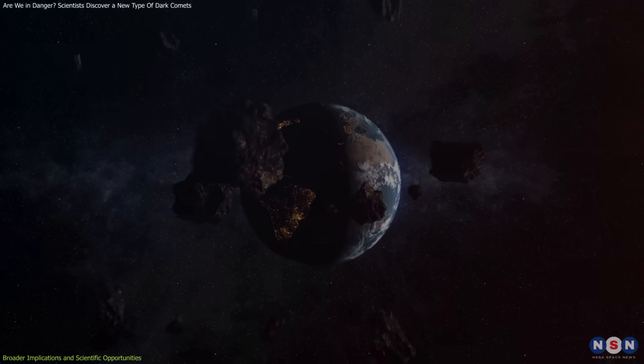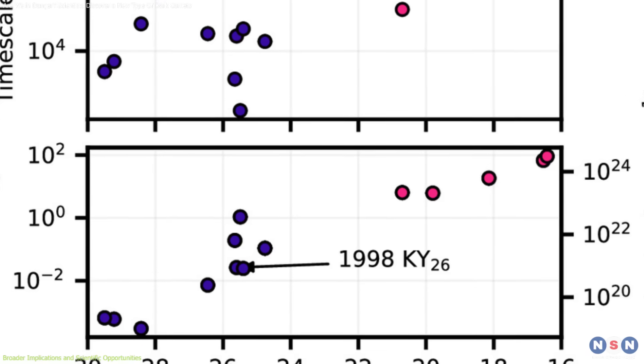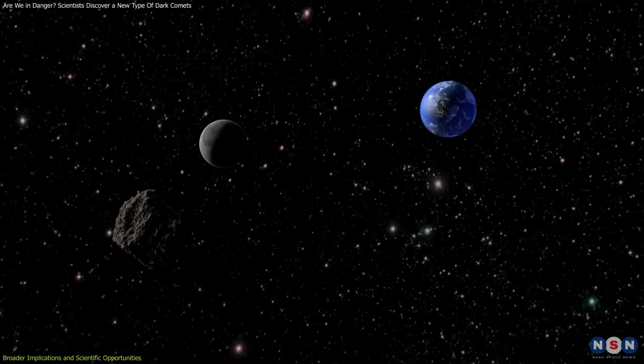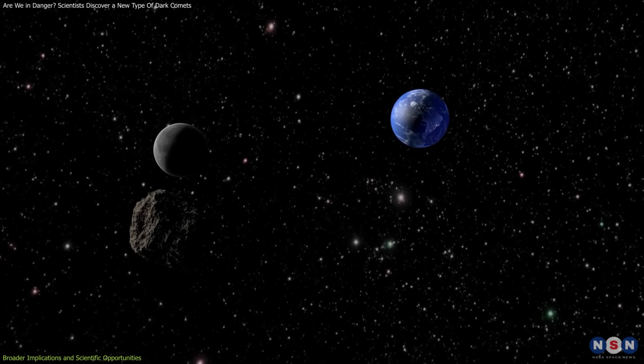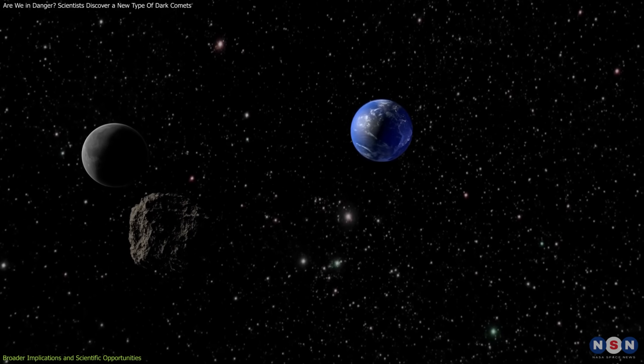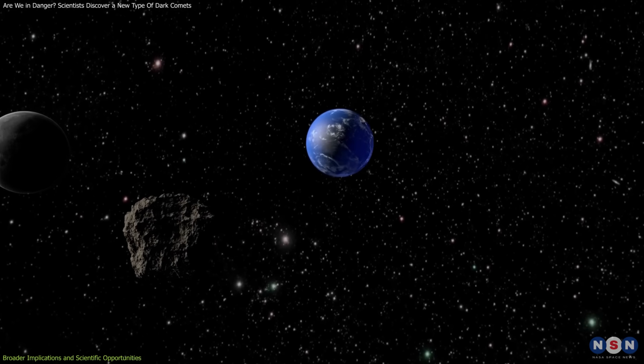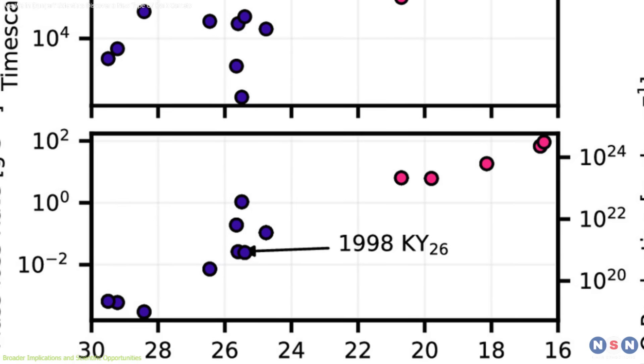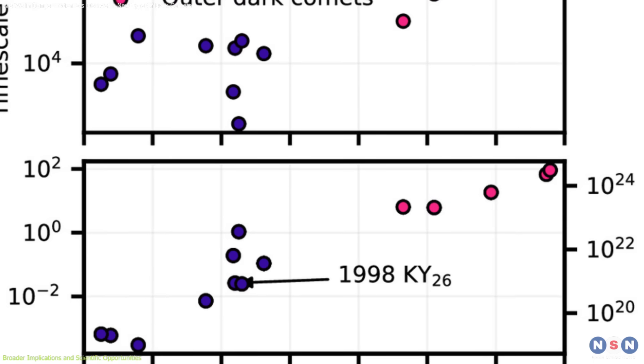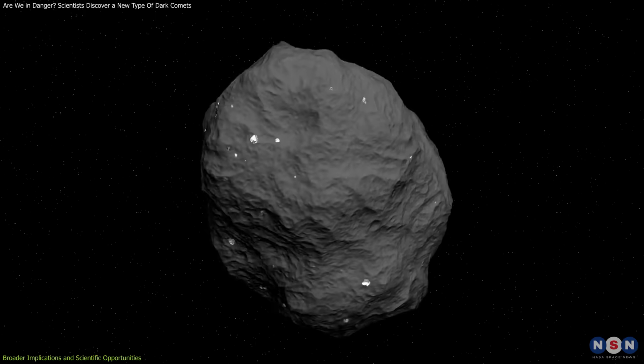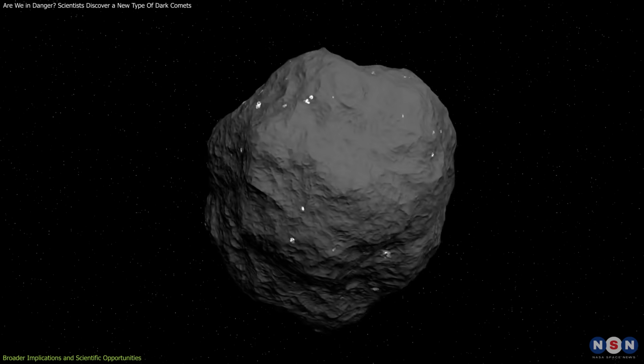As of now, 14 dark comets have been identified. This count includes objects initially thought to be asteroids, but later reclassified due to their non-gravitational acceleration. The doubling of their number from 7 to 14 resulted from detailed orbital analyses which revealed their unique dynamics and composition.